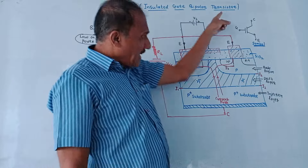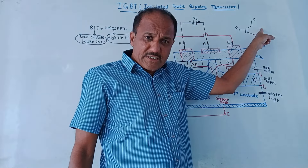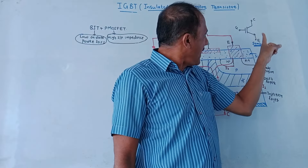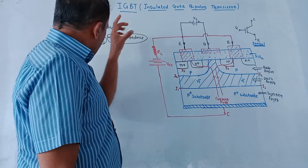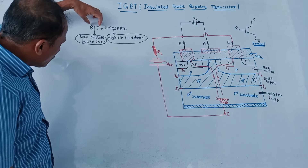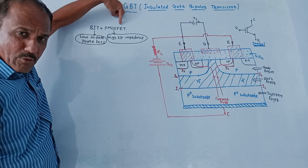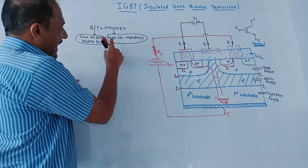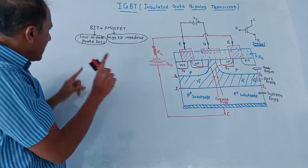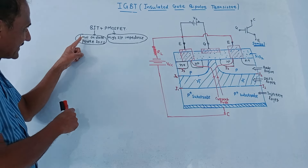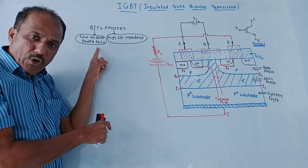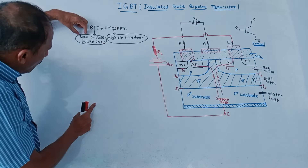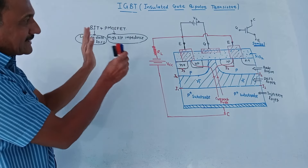It is basically a transistor. It has three main terminals: gate terminal, collector terminal, and emitter terminal. It is a combination of two devices — BJT and Power MOSFET. The important advantage of Power MOSFET is it has high input impedance, and the important advantage of BJT is it has low on-state power loss. So in IGBT, advantages of both — low on-state power loss and high input impedance — are combined.